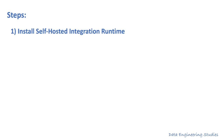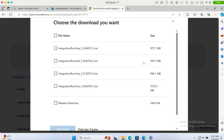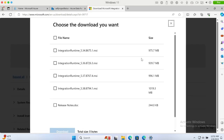The first step is to download the self-hosted integration runtime in your OnPrem system. In order to establish a connection between the OnPrem system and Azure, we need to install the self-hosted integration runtime. This is a downloadable software which you can download and install. We can search for self-hosted integration runtime — that will take you to the Microsoft page. Let me click download and select the latest version and click download.